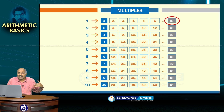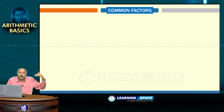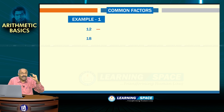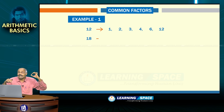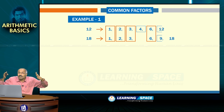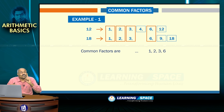Having learnt these things, let us move on to common factors to arrive at the highest common factor. Let us take the first example with two numbers: 12 and 18. The factors for 12 are 1, 2, 3, 4, 6, and 12. Similarly, the factors for 18 are 1, 2, 3, 6, 9, and 18. There are some common factors for these two numbers. The common factors are 1, 2, 3, and 6.